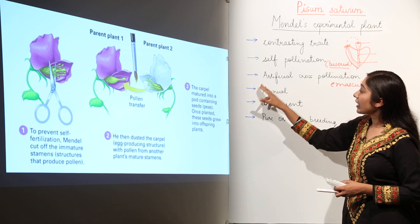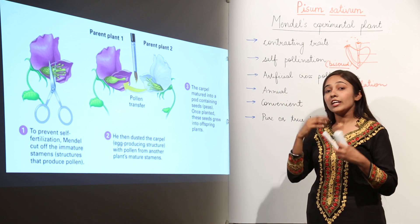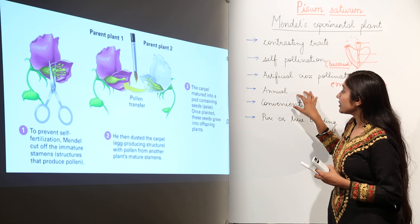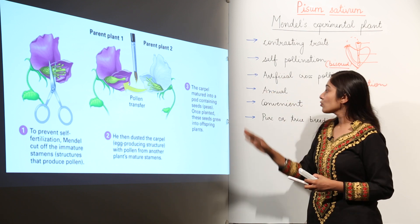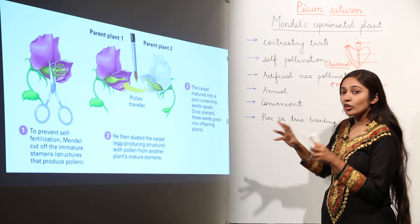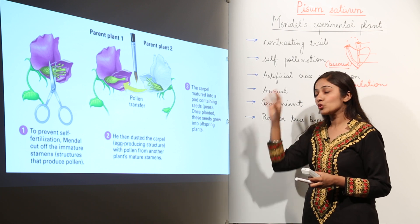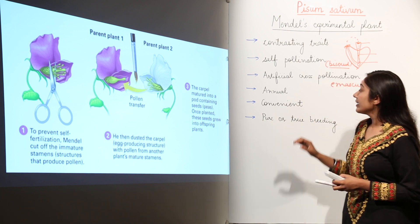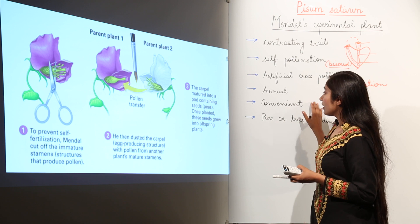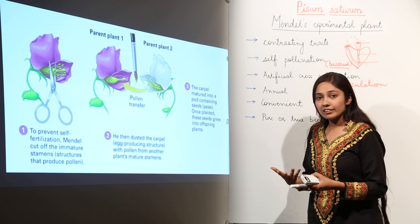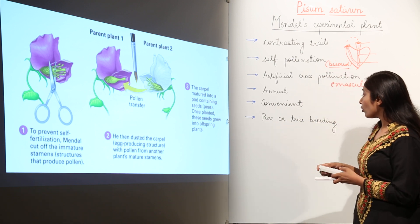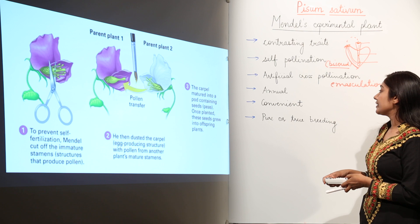The pea plant was annual, meaning Mendel could get one complete generation within a single year. This annual behavior helped Mendel in his studies. Additionally, the plant was convenient and easily cultivated, which is also why Mendel chose it. Next: pure or true breeding plants.